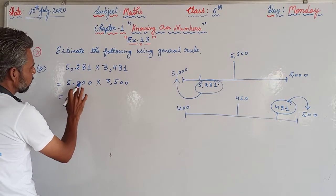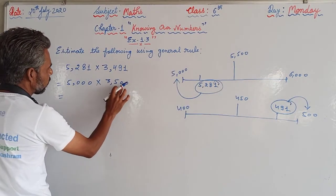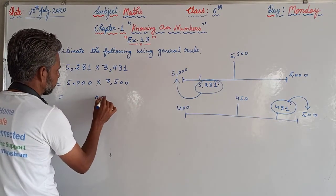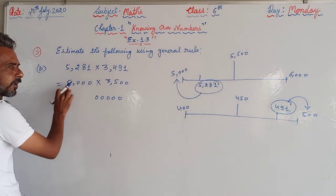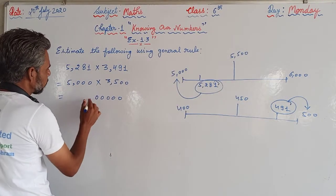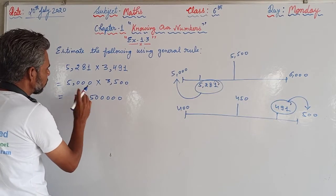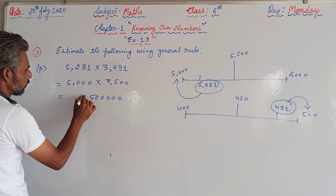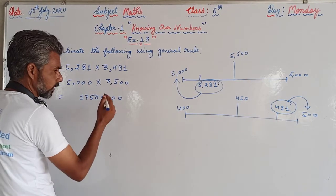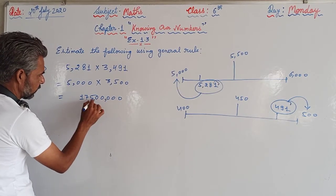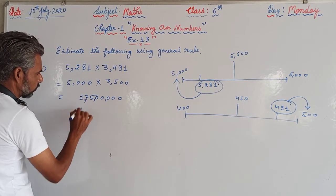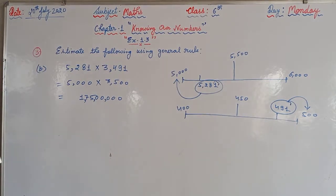Now, how many zeros are there? 5,000 has three zeros and 3,500 has two zeros — a total of three trailing zeros. So 5 × 35 = 175, and placing the zeros gives us 17,500,000. Afterwards, we place the commas as well. So this is our estimated answer.